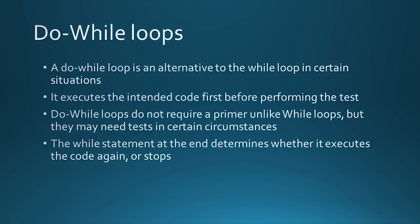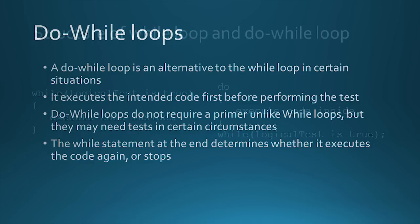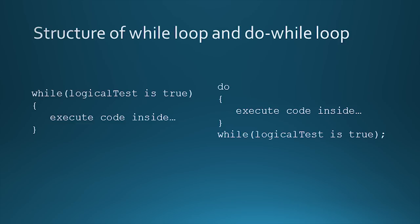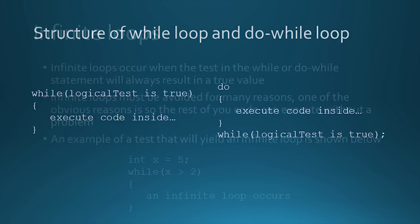A do-while loop is an alternative and a reverse of the while loop. It executes the code first and then tests it to see if it repeats. In the case of the restaurant calculation, the do-while loop wouldn't need a primer because it can execute the user input and test it afterwards.